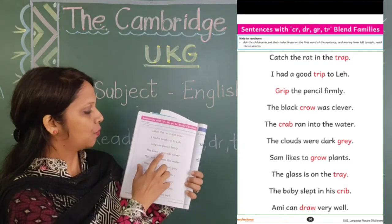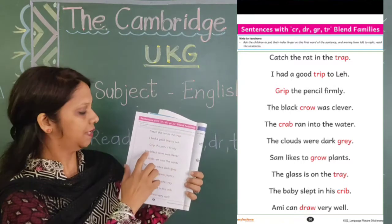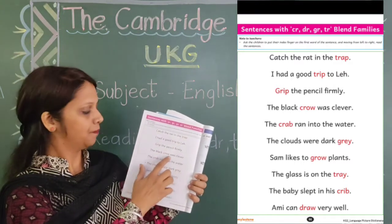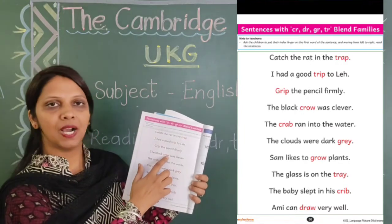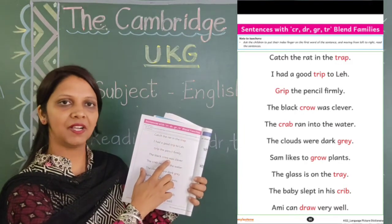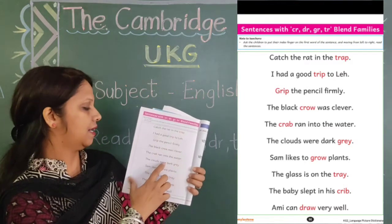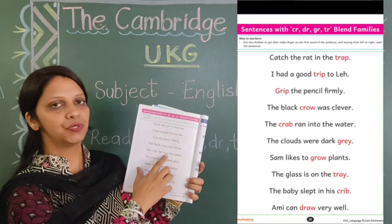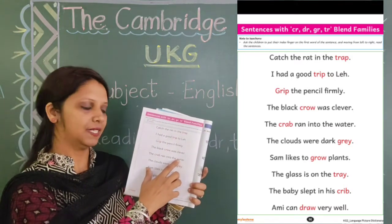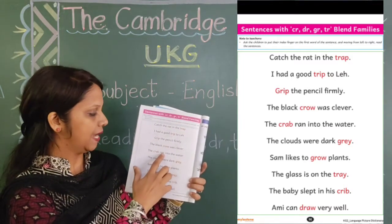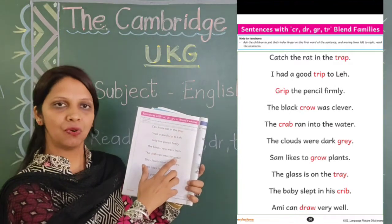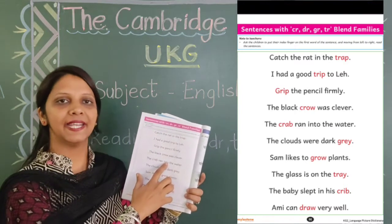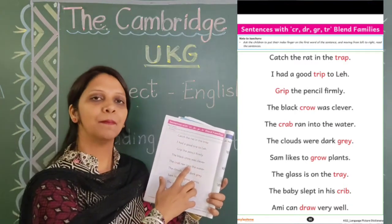The black crow was clever. Next line is: The crab ran into the water. The crab ran into the water. Kekra paani mein bhaaga. Kekra paani mein bhaaga.